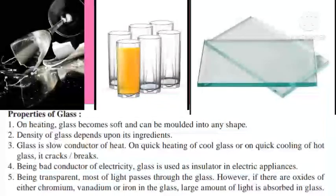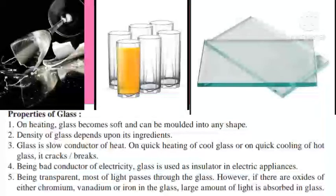Properties of Glass: On heating, glass becomes soft and can be molded into any shape. The density of glass depends upon its ingredients. Glass is a slow conductor of heat; on quick heating of cool glass or quick cooling of hot glass, it cracks or breaks. Being a bad conductor of electricity, glass is used as an insulator in electric appliances. Being transparent, most light passes through glass. However, if oxides of chromium, vanadium, or iron are present, a large amount of light is absorbed.